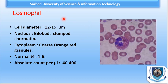The eosinophil is also 12 to 15 microns in size, is bilobed, has clumped chromatin, and contains coarse orange-red granules. Normally it is 1 to 6 percent on the peripheral smear, and its absolute count per microlitre is 40 to 400 cells.